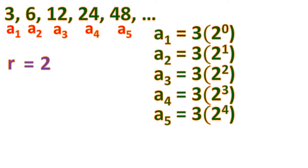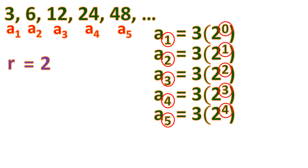What's the pattern? When n is 1, the exponent is 0; when n is 2, the exponent is 1; when n is 3, the exponent is 2; when n is 4, the exponent is 3; and when n is 5, the exponent is 4. The relationship is simply subtracting 1 from n to get the exponent. So the general formula is: a sub n equals the first term times the common ratio to the power of n minus 1.